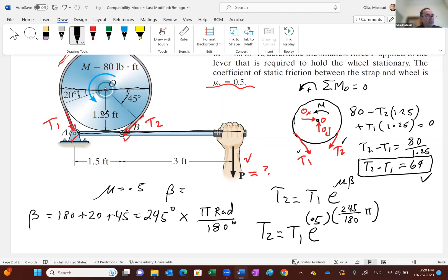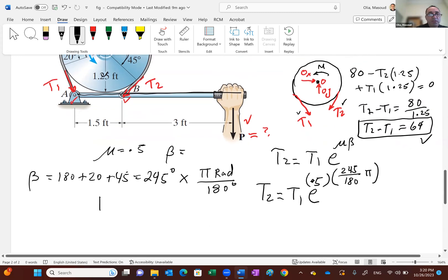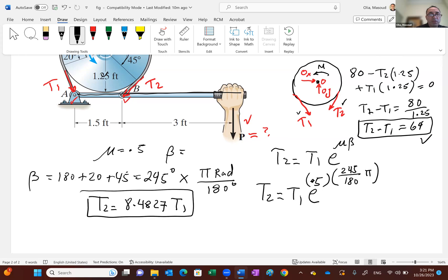Guess what? If you do that, e to that power, T2 becomes 8.4827 T1. So here's one equation. Here's another equation. It's just substitution method. Solve for T1 and T2.